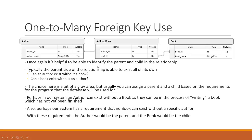It's helpful to identify the parent and child in the relationship. Typically, the parent side of the relationship is able to exist all on its own. The questions we would ask ourselves are: can an author exist without a book, or can a book exist without an author? With this particular example, the choice is a bit of a gray area — can an author exist without a book? If you have never created a book before, could you call yourself an author? And can a book exist without an author? Potentially, you can have a book written by someone who doesn't wish to be named, or someone under a pen name, so there's no concrete way to tie it back to an actual author.